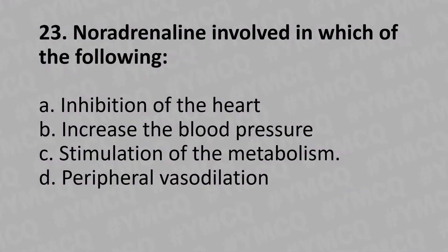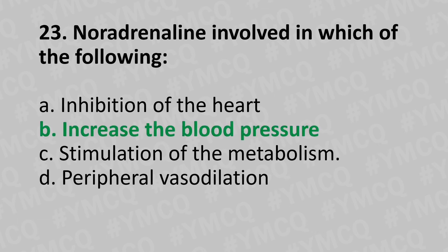Moving to our twenty-third question. Noradrenaline is involved in which of the following? Option A: inhibition of the heart. Option B: increase in blood pressure. Option C: stimulation of metabolism. Option D: peripheral vasodilation. And the answer is Option B: increase in blood pressure.